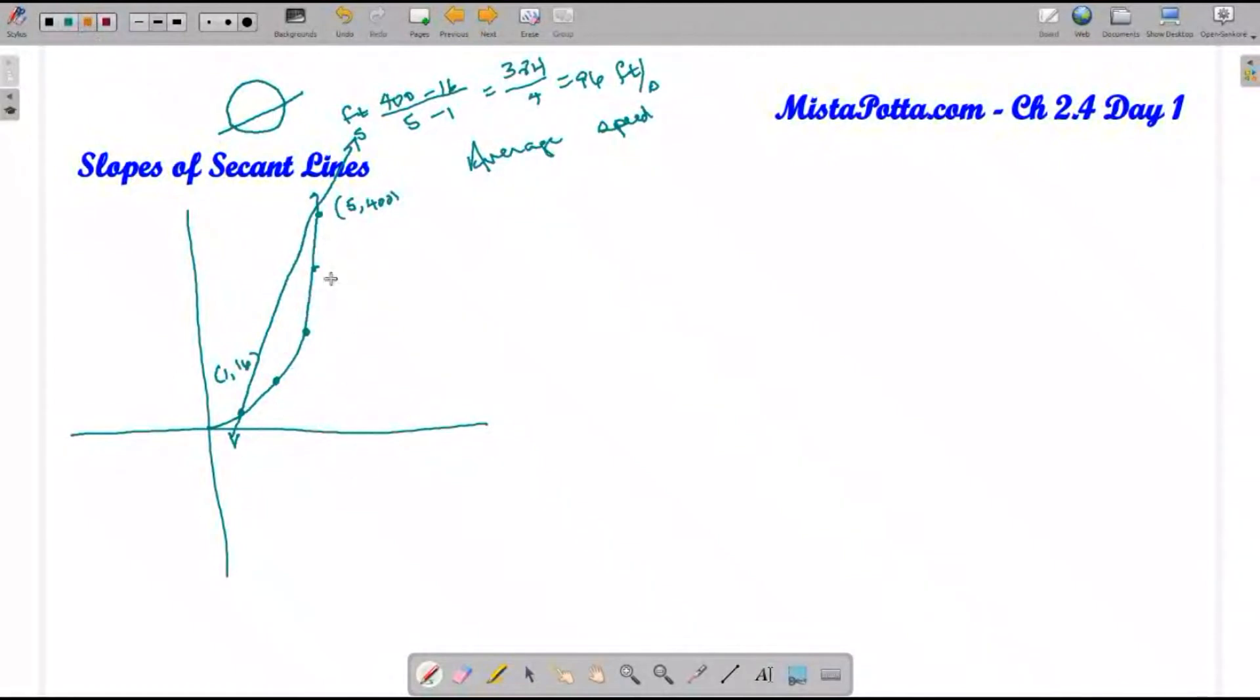I can continue talking about secant lines between 1,16 and point 4,256. If I were to draw this secant line, I've got a secant line that's not as steep, so this slope should be less. If I calculate that I find 256 minus 16 over 4 minus 1, so I end up with 240 over 3, which is 80 feet per second. I do have this confirmation that this is a shallower line, so it should be a smaller slope.